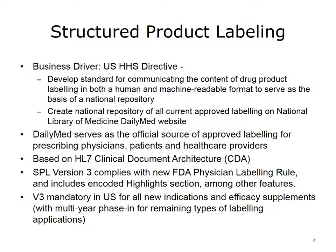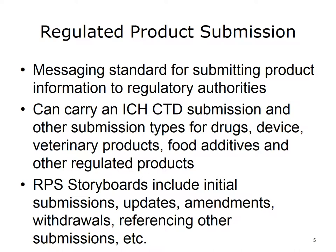SPL Version 3 complies with the new FDA Physician Labeling Rule and includes an encoded highlight section, among other features. SPL Version 3 is mandatory in the U.S. for all new indications and efficacy supplements, with a multi-year phase-in for remaining types of labeling applications. SPL is important because of the structured approach to drug labeling, noting potential adverse effects. The regulated product submission (RPS) standard is for conveying product information to regulatory authorities, and was developed by HL7 and ISO with input from ICH.